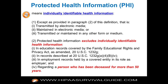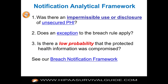If no exception applies, then you ask: is there a low probability that the protected health information was compromised? The omnibus rule changed this from a risk-of-harm analysis to a low-probability standard. The burden of proof is on you to prove low probability. The presumption is that there was a breach — if you get to step three, you better have a compelling argument to justify that it wasn't.